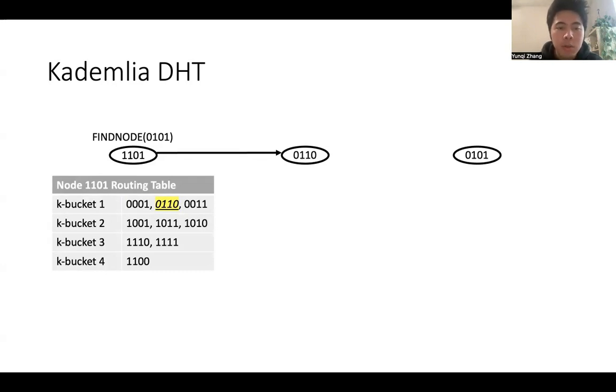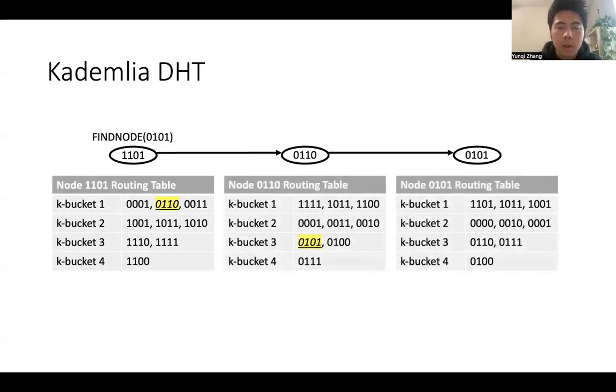And we forward the query to node 0110. Node 0110 will do a similar operation to locate node 0101, and forward the query to node 0101. Since we are doing recursive operation, node 0101 will forward the resource back to node 0110, and node 0110 will forward the resource back to node 1101.